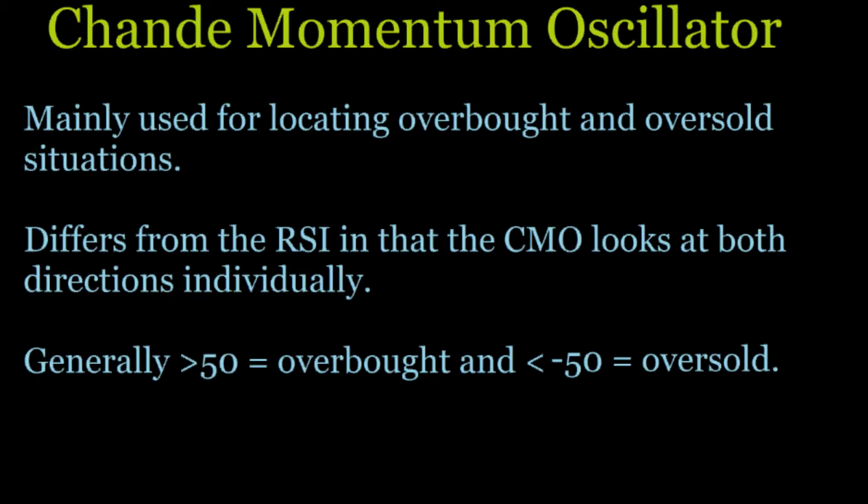The Chande Momentum Oscillator is mainly used for finding overbought and oversold situations. It's a little different from your RSI. The CMO differs because it looks at the force, the push in each direction — upward pushes and downward pushes individually. Generally, if the CMO is greater than 50 it's considered possibly overbought, and if it's less than negative 50 then it's oversold. It fluctuates over the zero line, and a crossover of the zero line suggests buy and sell points.